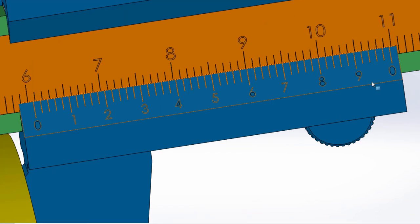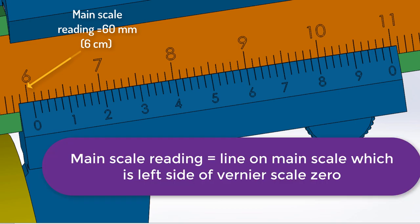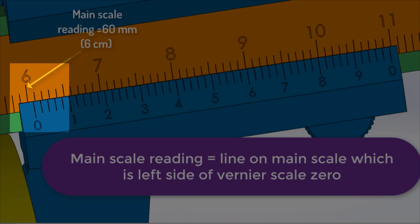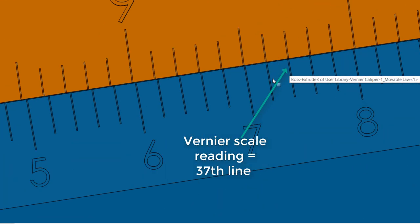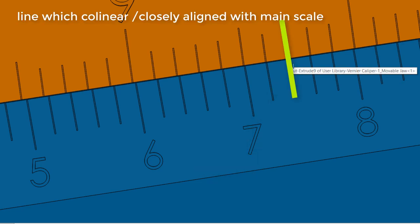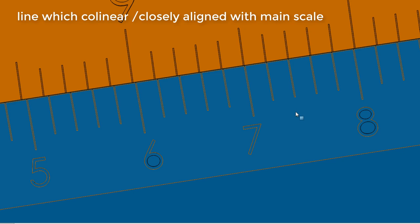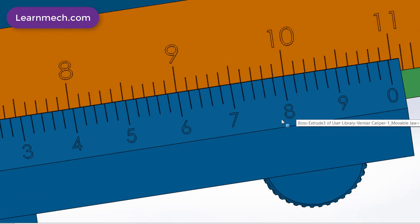Main scale reading is the line which is left side of Vernier scale zero. Vernier scale reading is the line which is aligned or collinear with main scale line. Here in this case it is the 37th line if we count from left side zero.